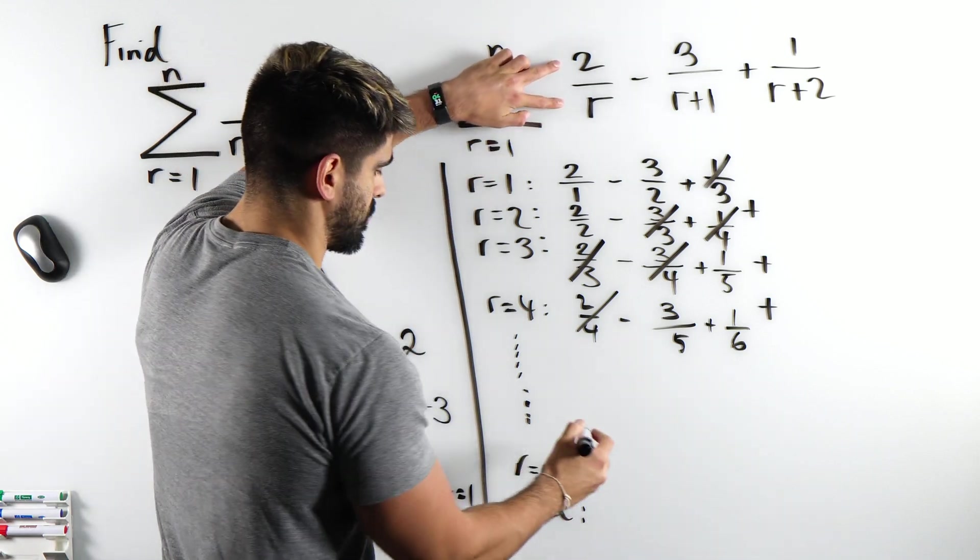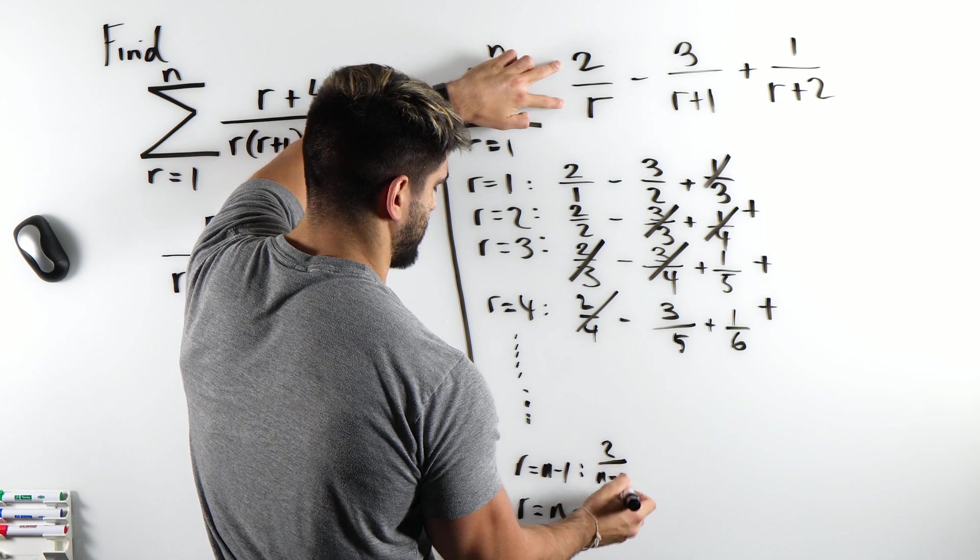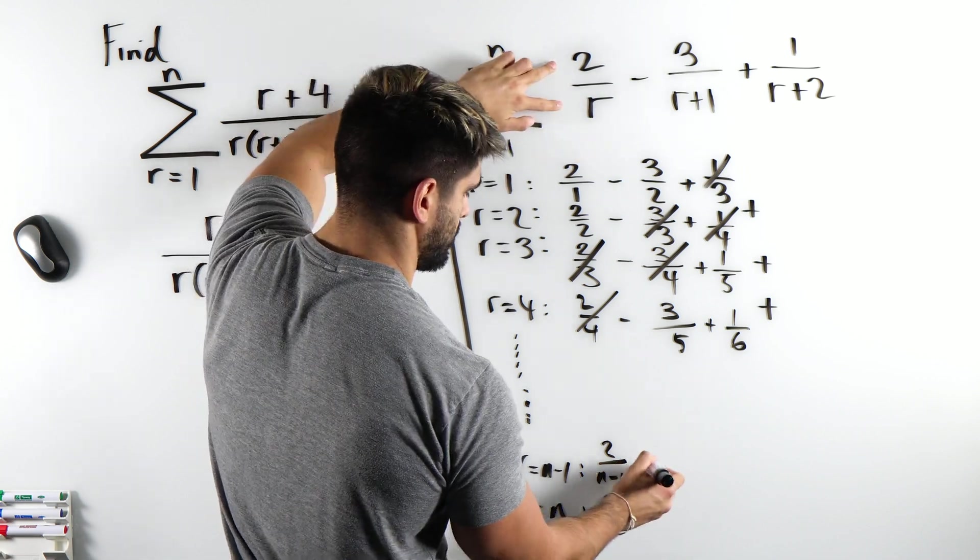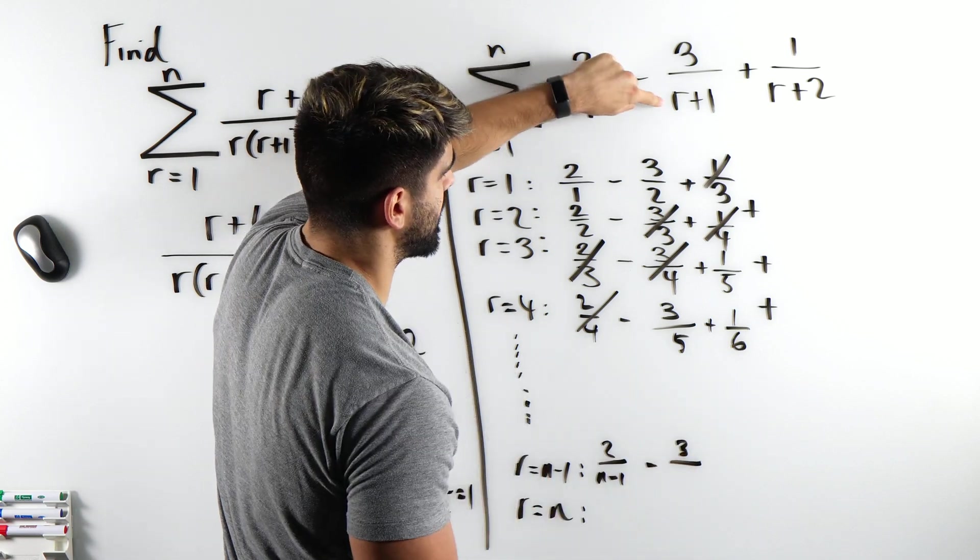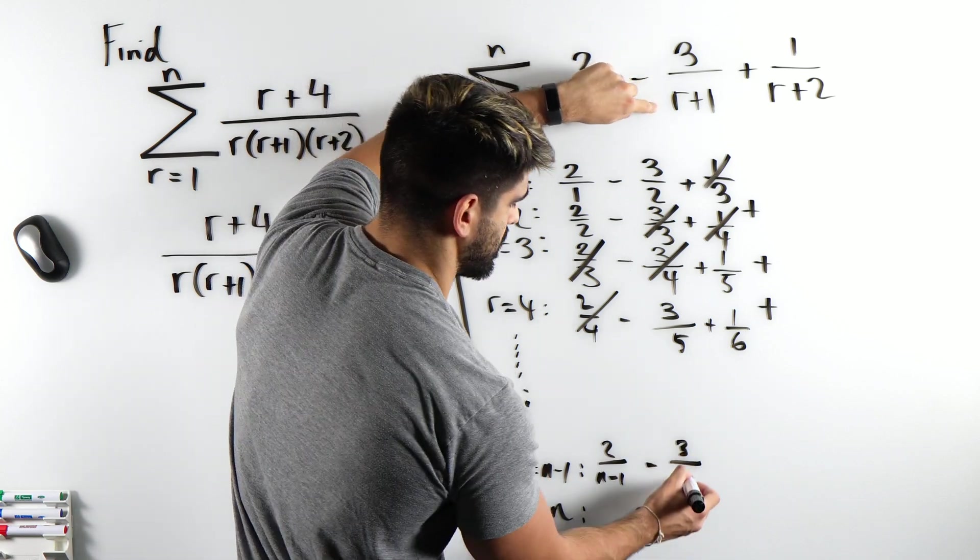Now when we sub in n minus 1, we're going to get 2 over n minus 1, smudging the board, minus 3 over, when you sub in n minus 1, n minus 1 plus 1 is just n.